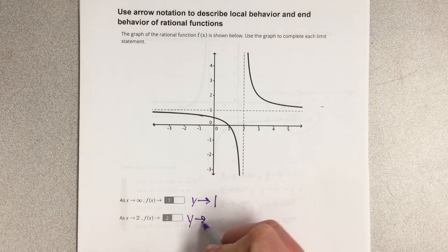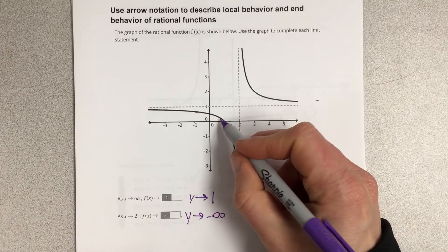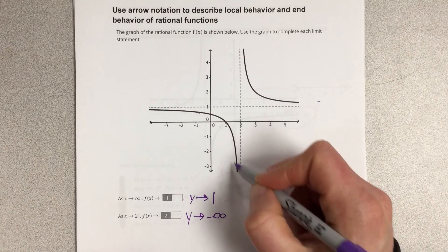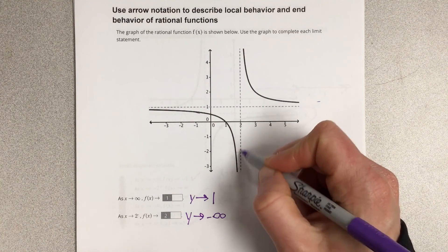Well, the y value is approaching negative infinity because I'm going off infinitely in the distance, getting closer and closer to this vertical asymptote.